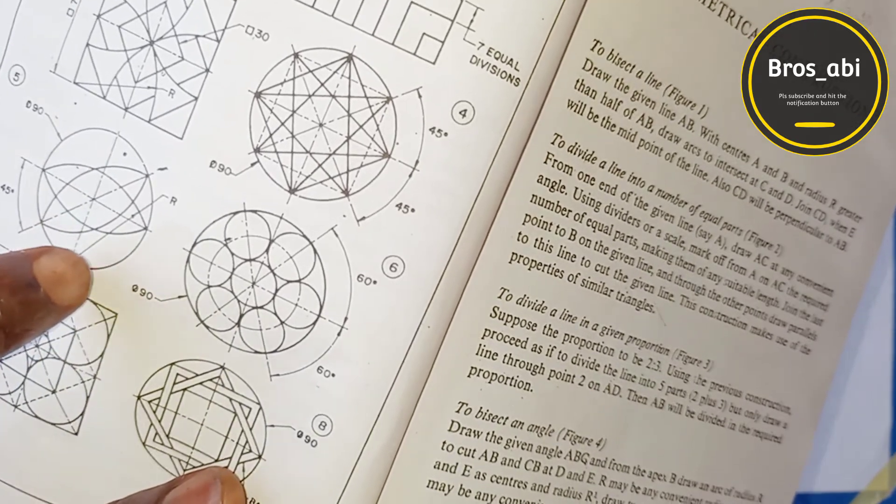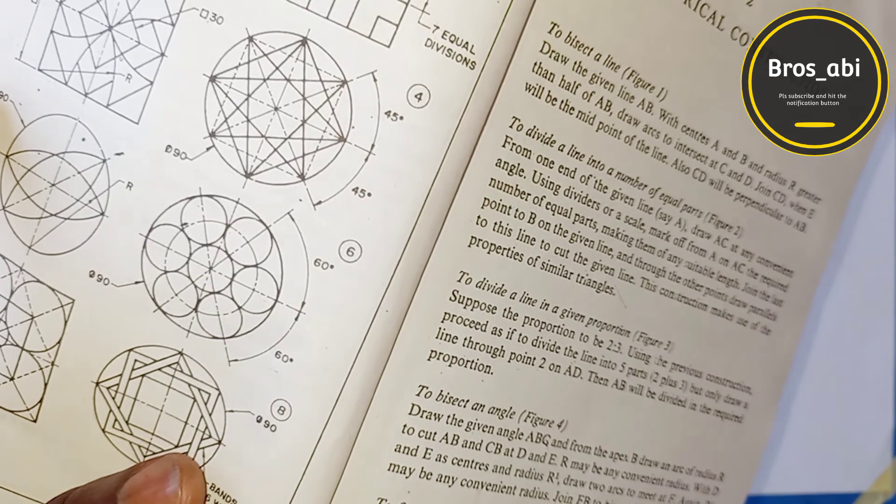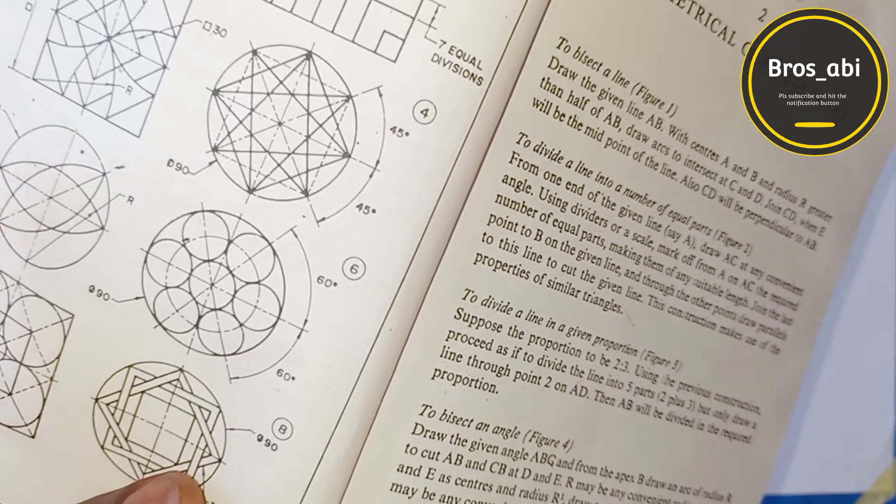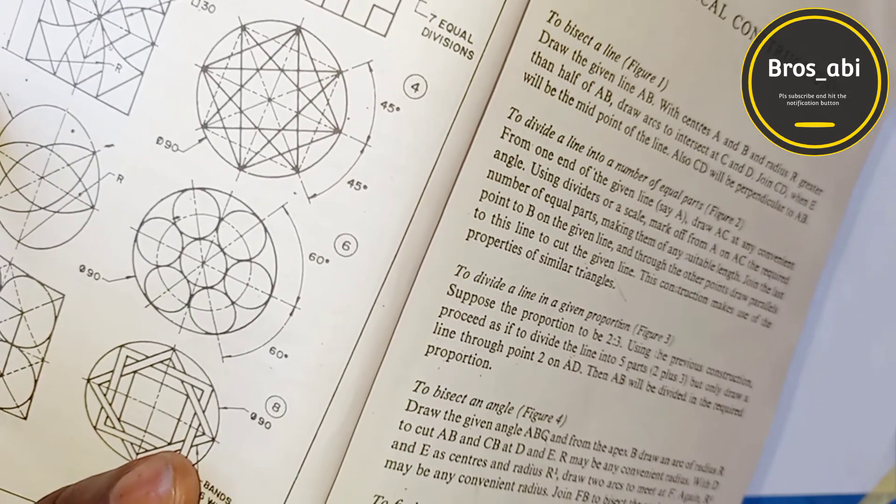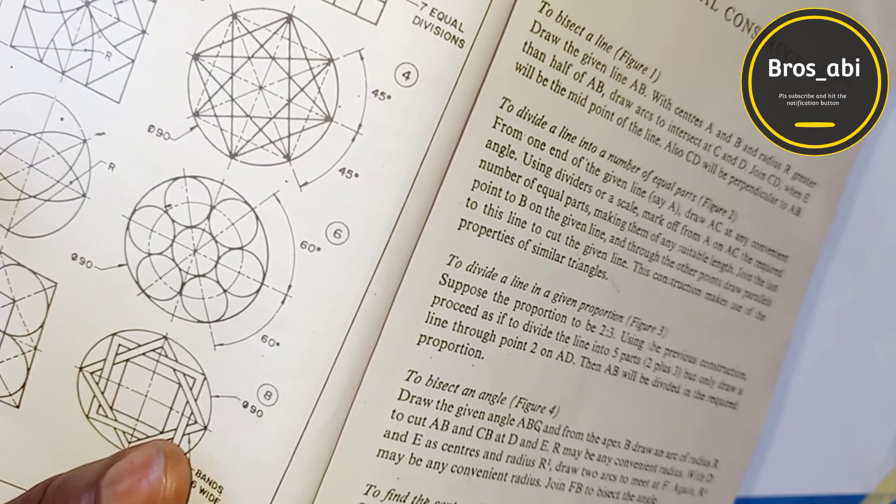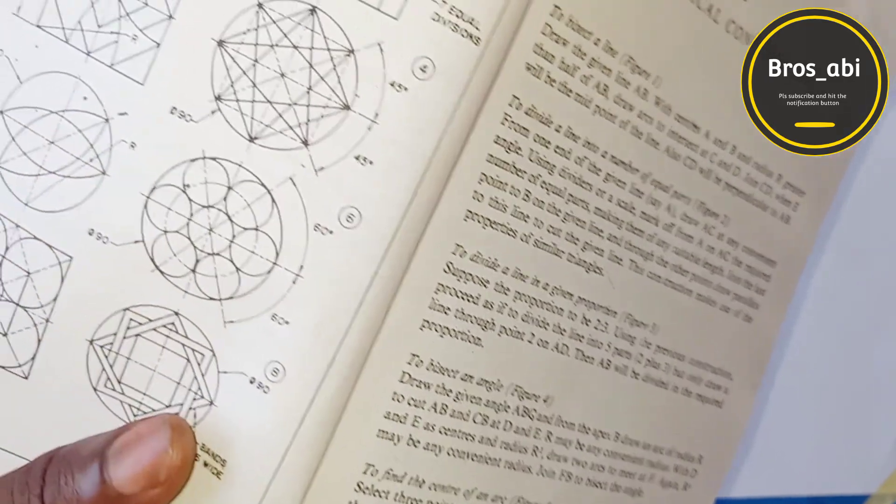And now to draw, that means the first step is to draw a circle having 90 millimeter diameter. To draw a circle with 90 millimeter diameter, we divide this 90 by 2 which will give us 45 millimeter and that is the radius. So we are using 30 millimeter as the radius.